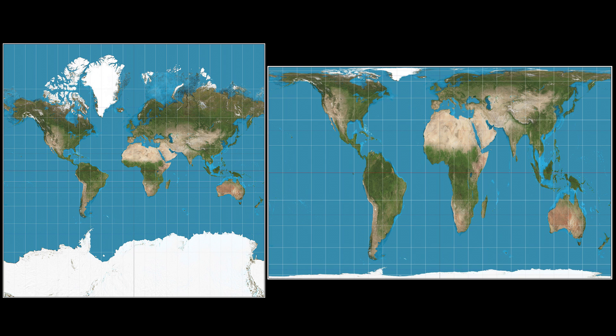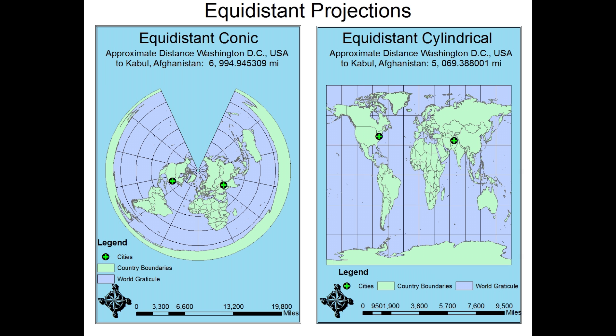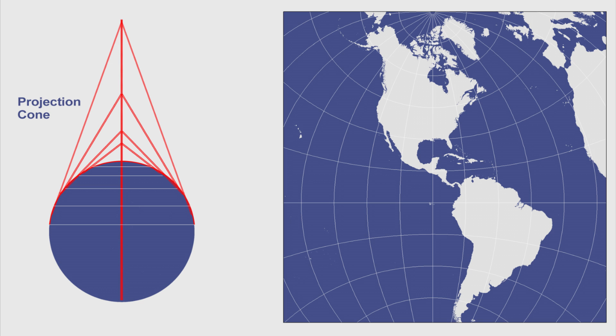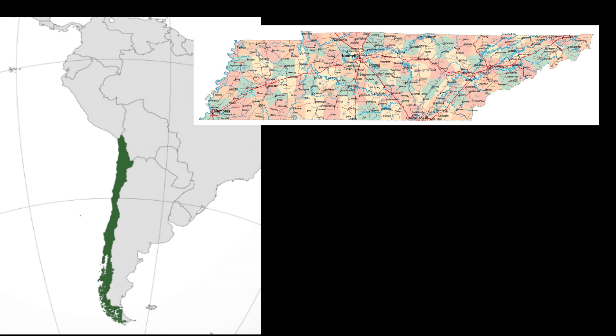The third major type of projection I want to discuss are equidistant ones. As it sounds, it preserves the distance from one point to all other points on a globe. The equidistant conic projection is one of these, and it is very lightly used — normally just used for small countries showing large-scale small areas. Just like all conic projections, it's much better to show things oriented east-west as opposed to north-south, so a great map for Tennessee, not so much for Chile.